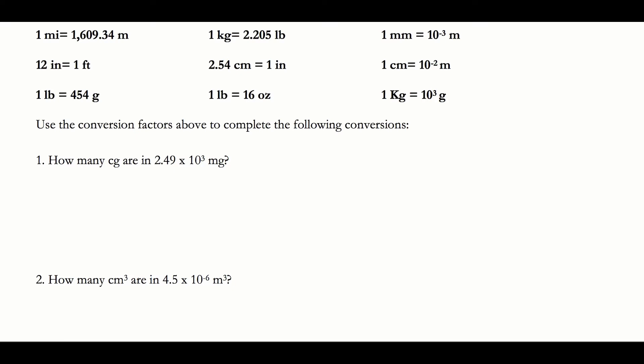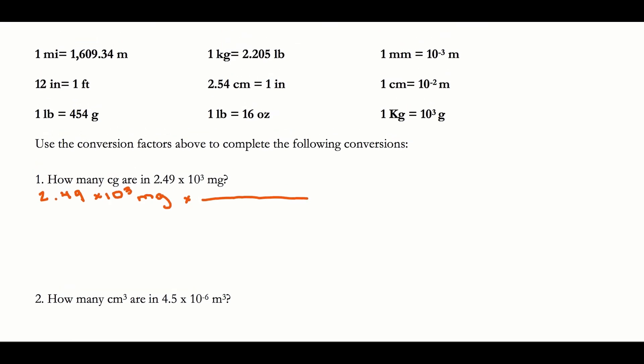My first step, as always, is to write my given. My given here is 2.49 times 10 to the third milligrams. Now if you look at your conversion factors, I tell you the relationship between milli and your base unit — so it says millimeters, but that could have been milligrams as well.